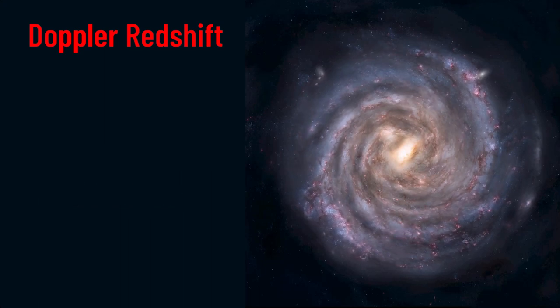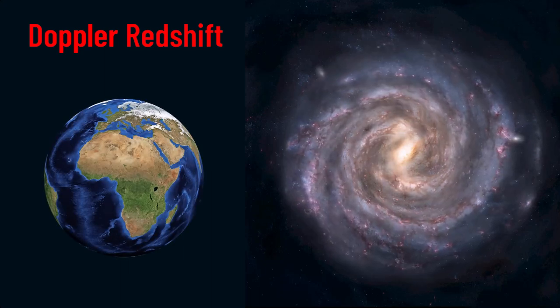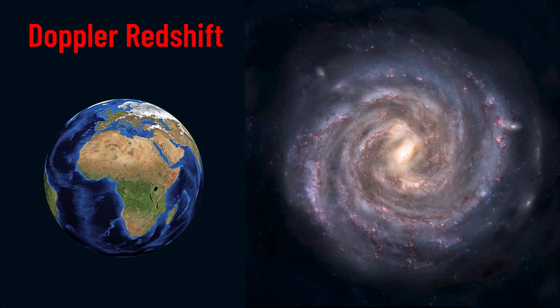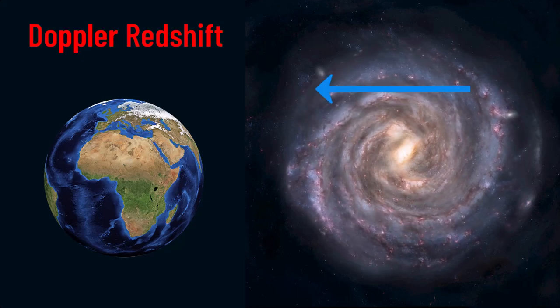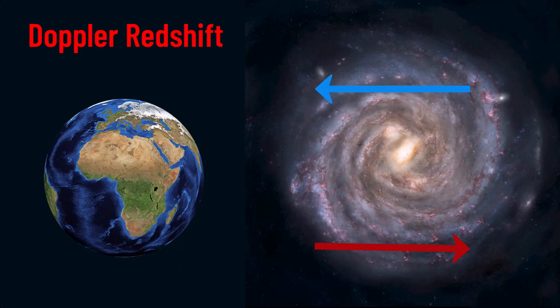which is viewed side-on from Earth. The stars which make up the galaxy are orbiting around its center, and in our line of sight, half of the stars are moving towards us, and the other half are moving away from us, with respect to the center of that galaxy.